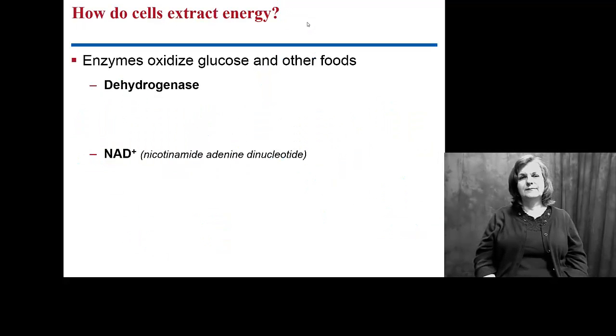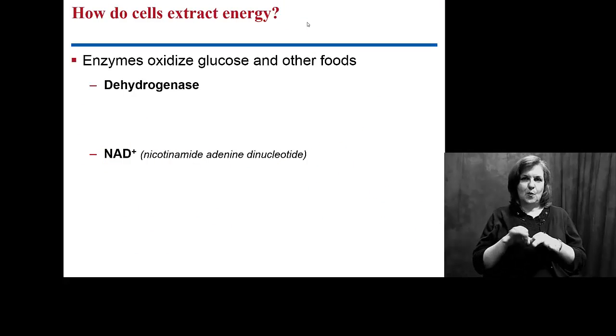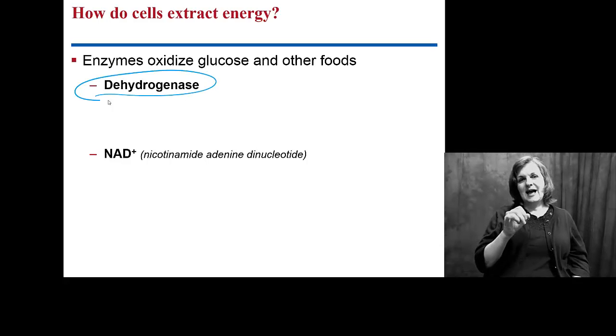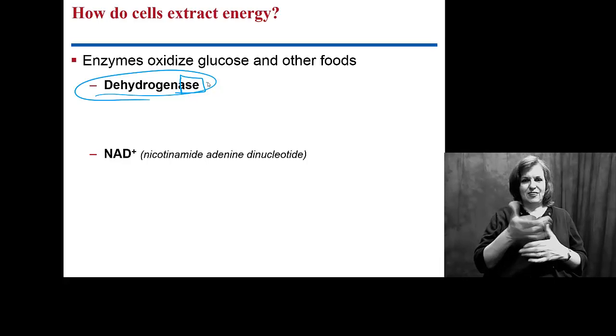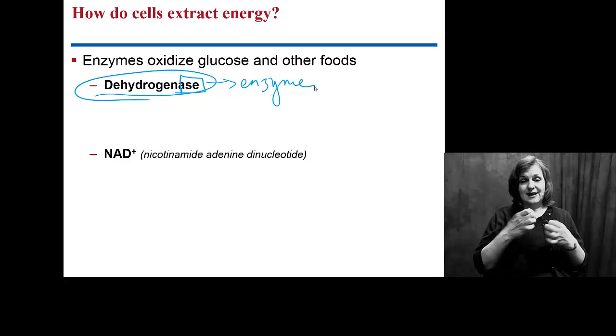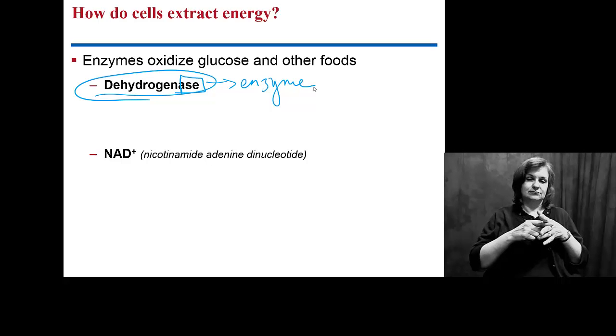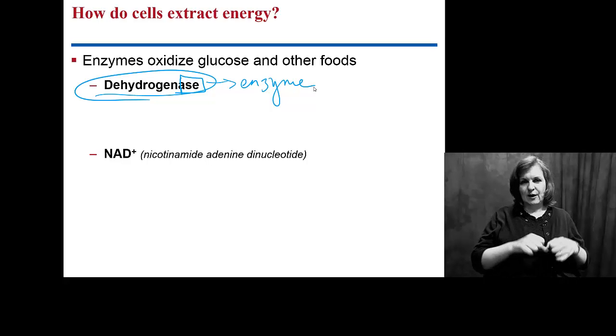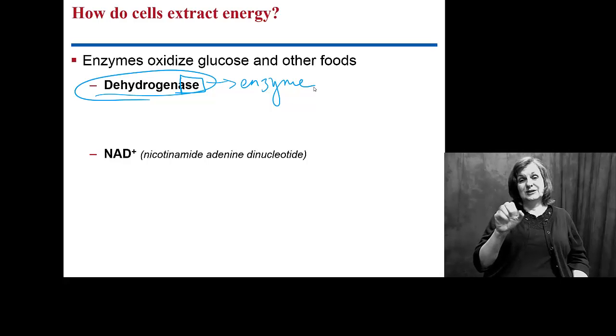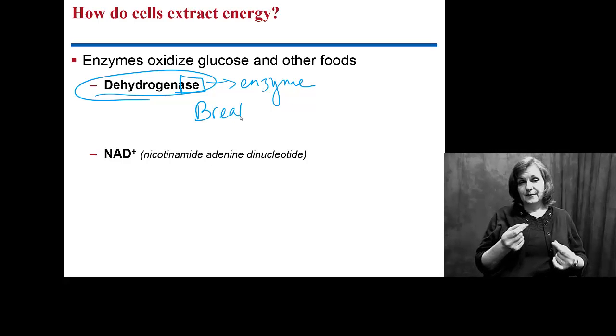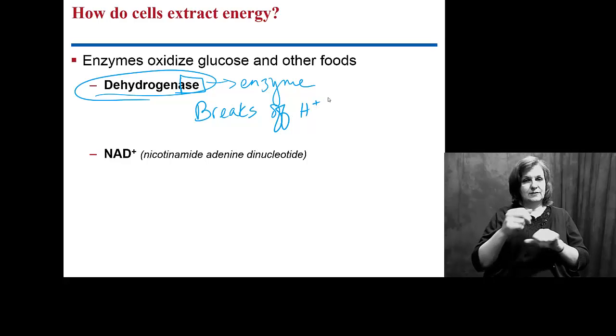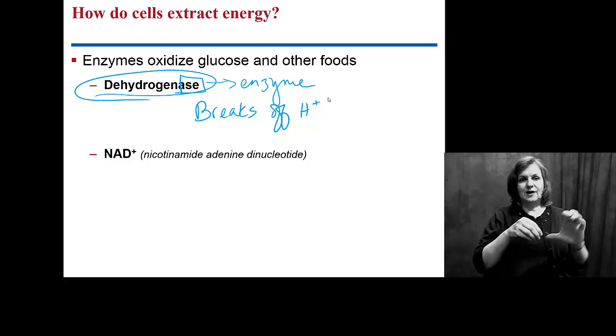So in this process, we need a couple of players in this game. One major player is dehydrogenase. Well, you should know what ACE is now. ACE is an enzyme, right? So it's going to help us actually start to break down our glucose molecules. And dehydrogenase, in particular, breaks off hydrogen molecules, or hydrogen atoms. So when we do that, when we break those away from the organic molecule of carbon and hydrogen being glucose, we can start to break down things pretty quickly.